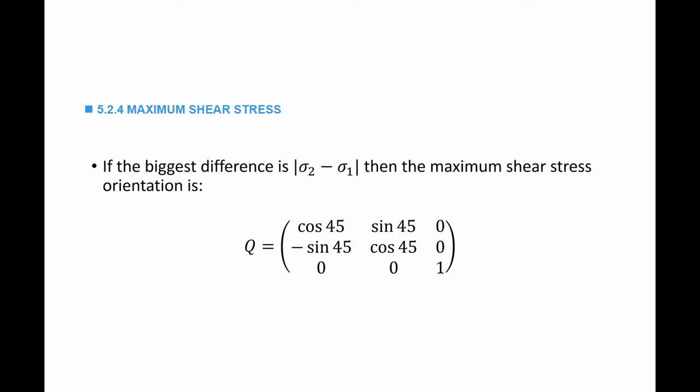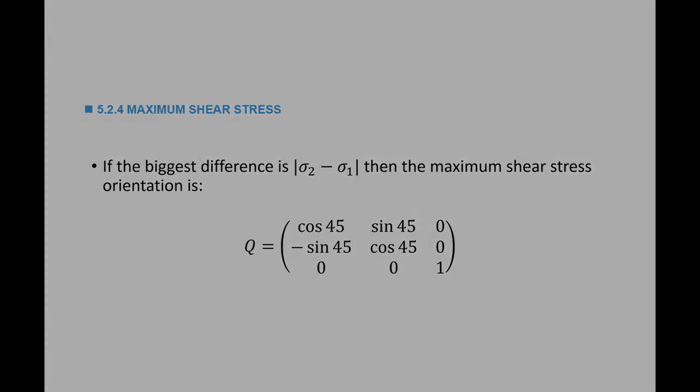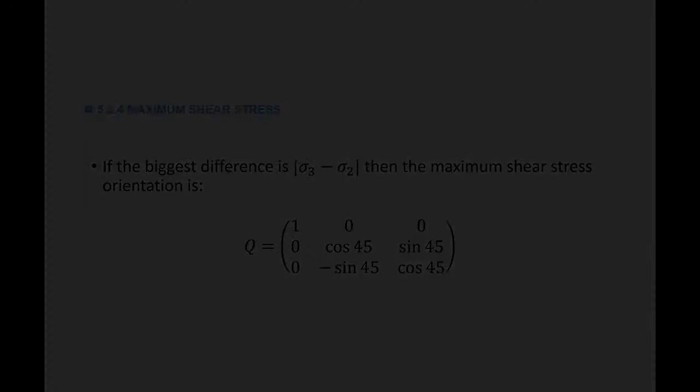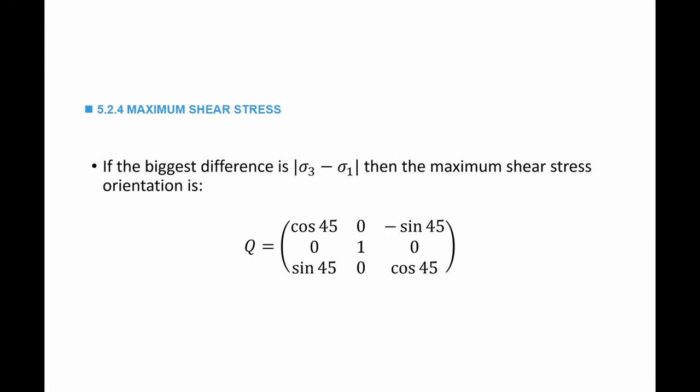If the biggest difference is between sigma_2 and sigma_1, the maximum shear stress orientation is obtained by rotating E1 and E2 by 45 degrees using the corresponding Q. If the biggest difference is between sigma_3 and sigma_2, rotate E2 and E3 by 45 degrees. If the biggest difference is between sigma_3 and sigma_1, rotate E3 and E1 by 45 degrees using the appropriate Q.